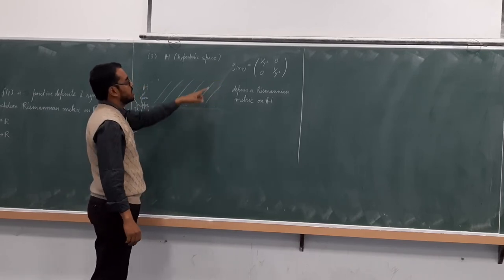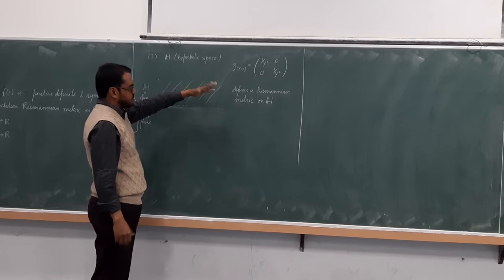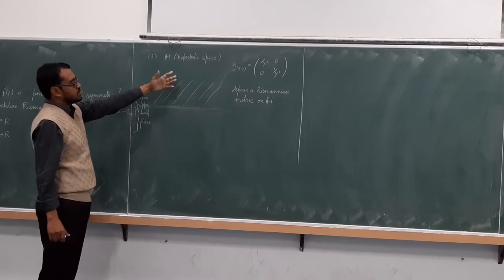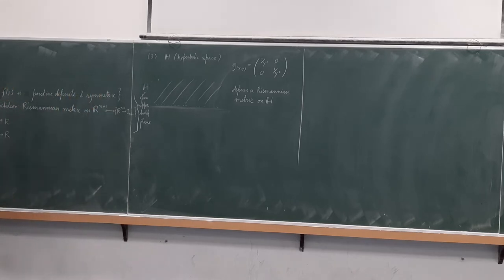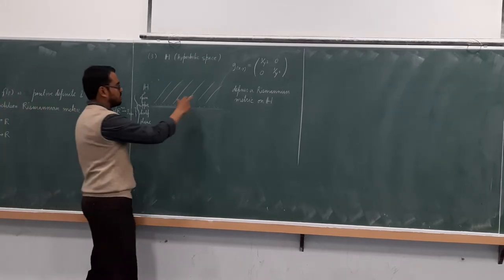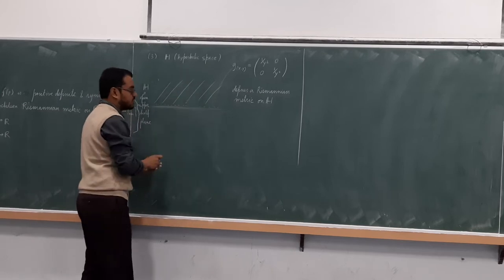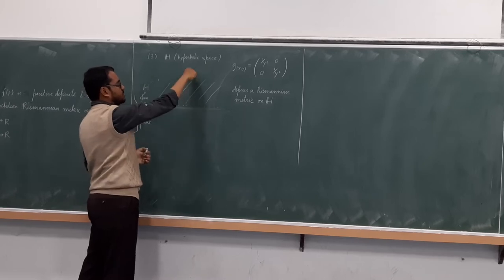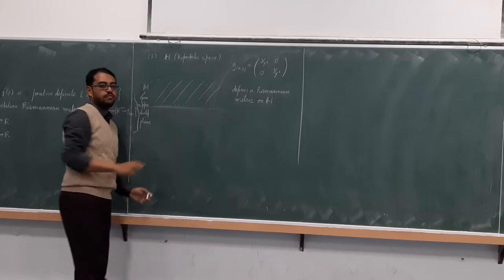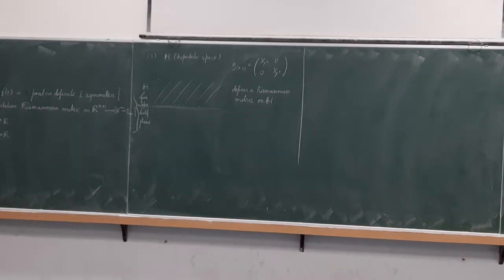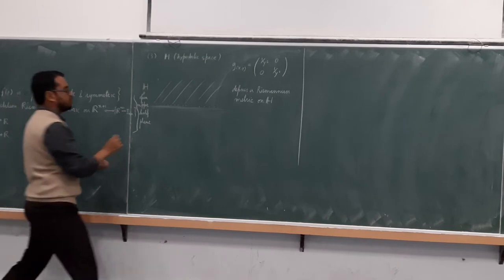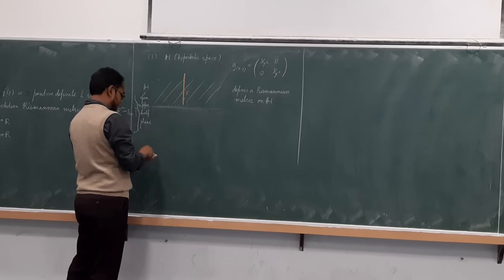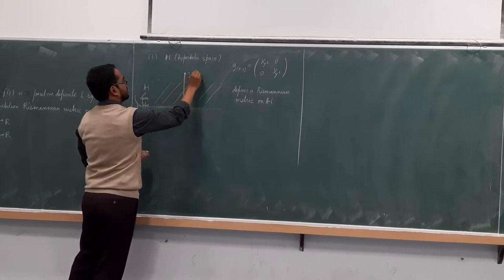This metric is important because when you calculate the Gaussian curvature it turns out to be constant −1. In particular, if you were to calculate the length of a curve going from an interior point toward the boundary, let's say from the point i to the boundary — taking the path γ(t) = i(1−t), which starts at i and heads toward 0.